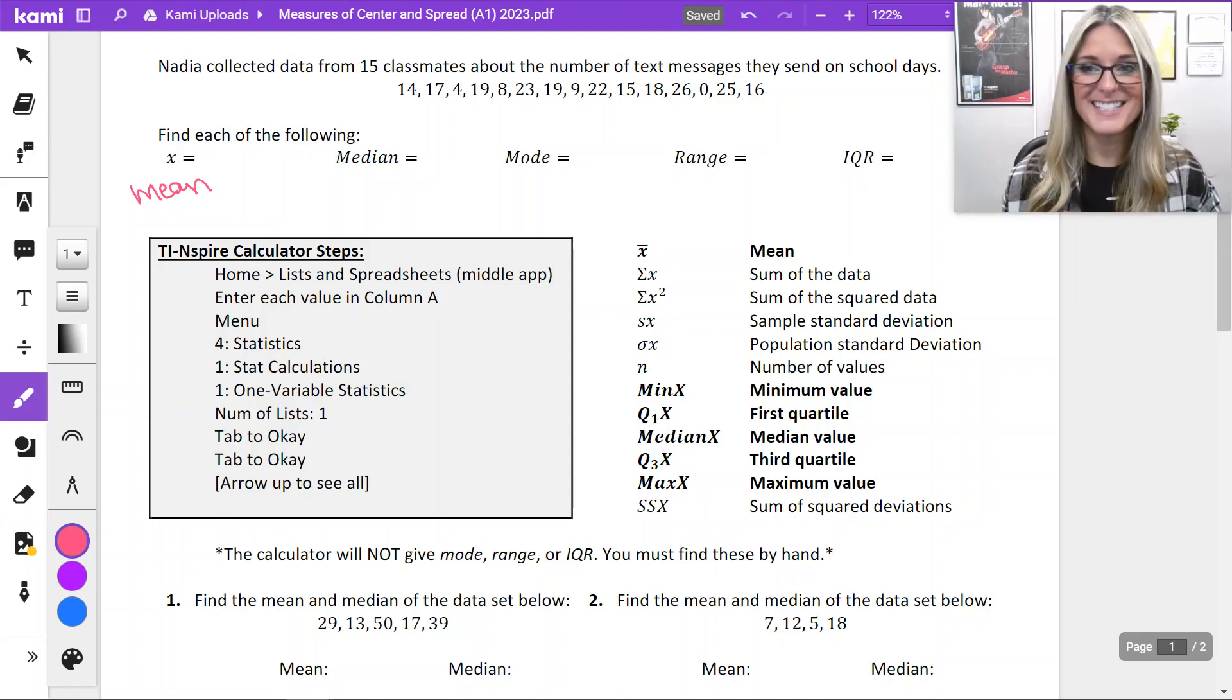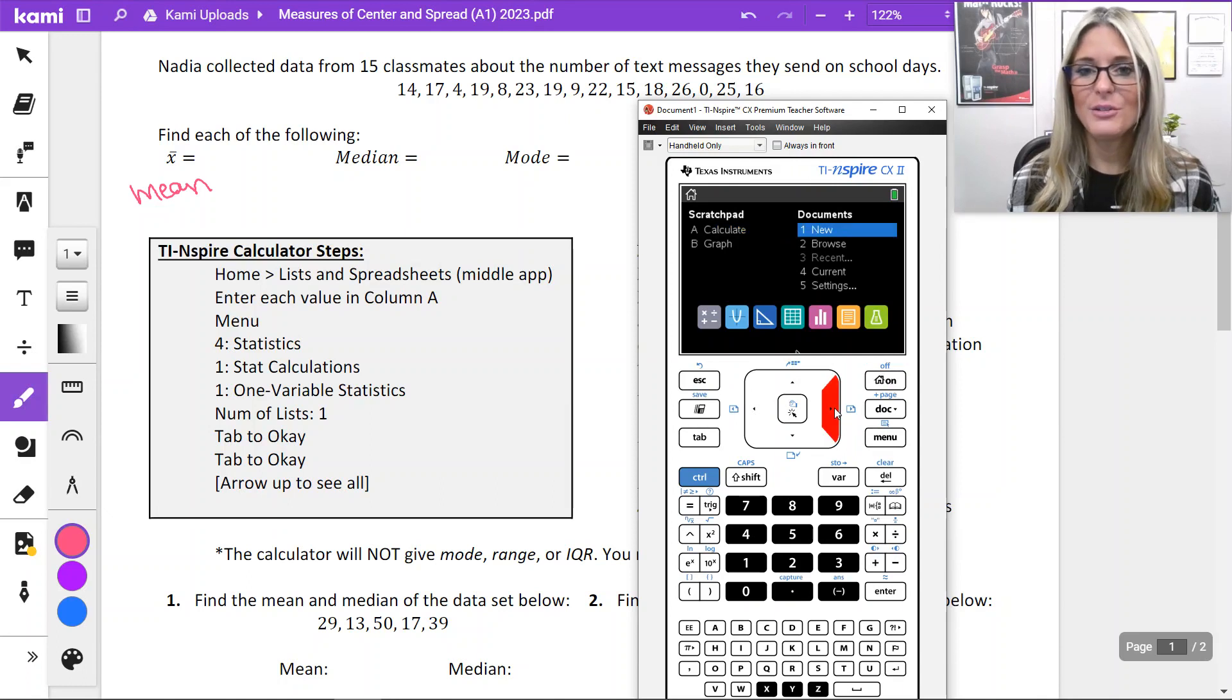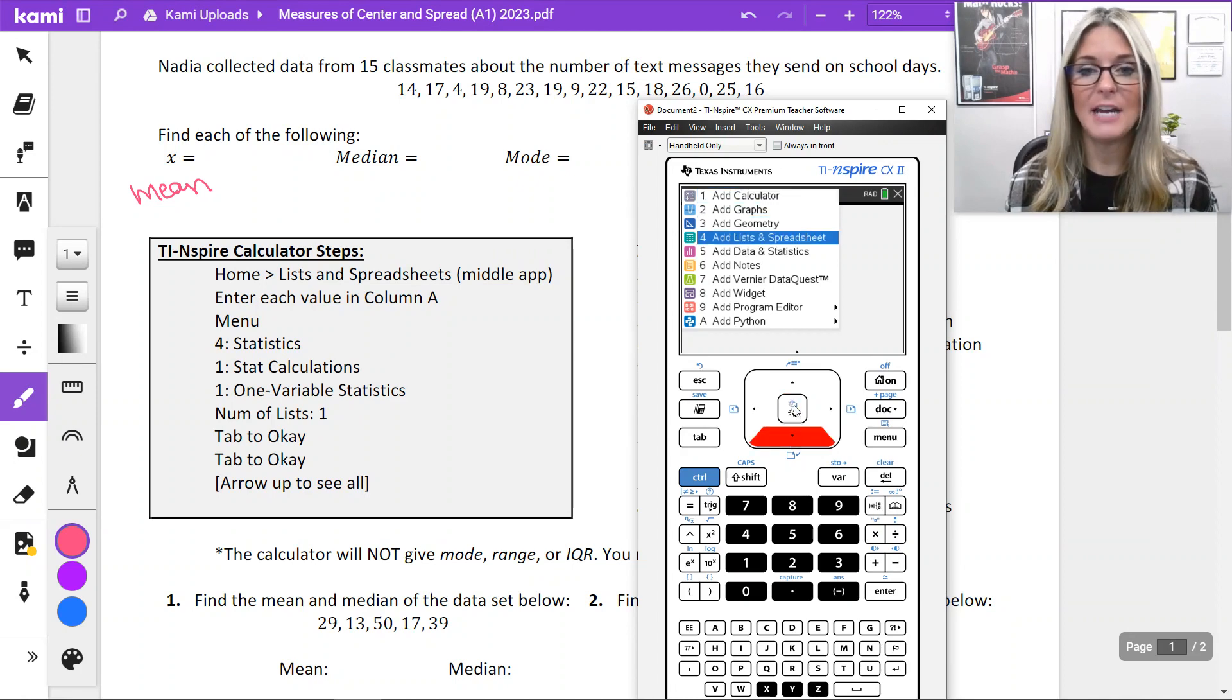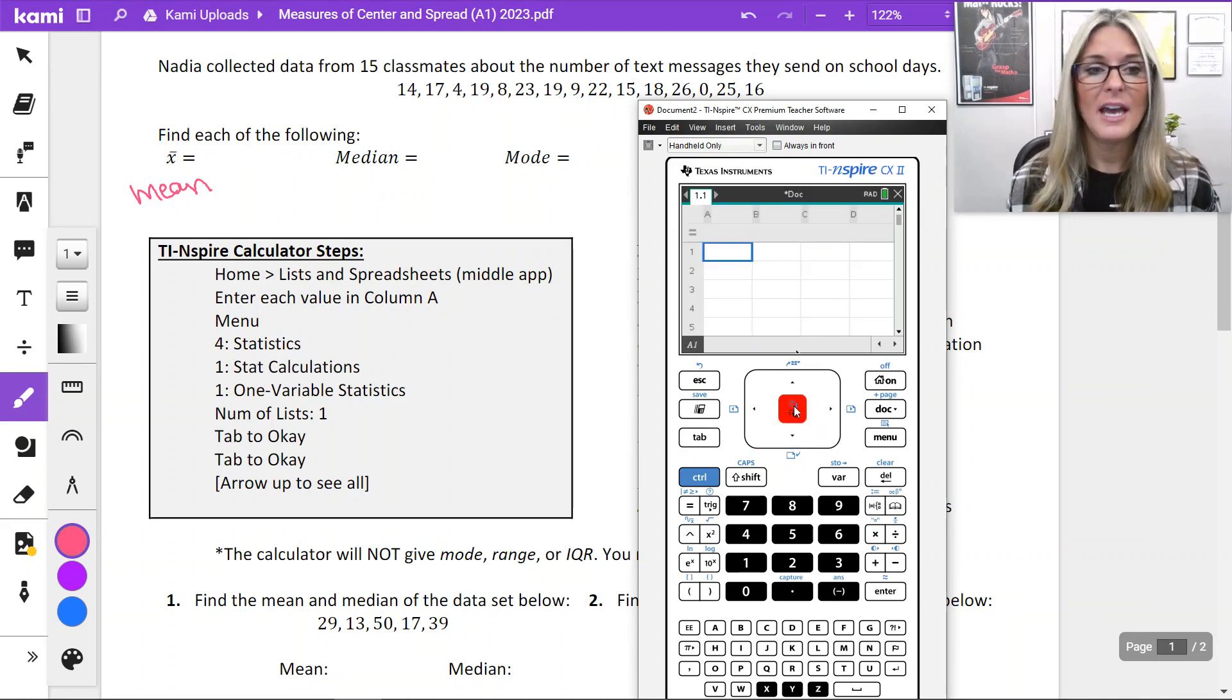From a new document, we're going to go to list and spreadsheets, number four. So far, we've used calculator, we've used graph. We're going to use list and spreadsheets today with these statistical values. And we're going to enter each of our values into column A. So we have 14. You can use the enter button, or you can arrow down. I'm going to use enter.